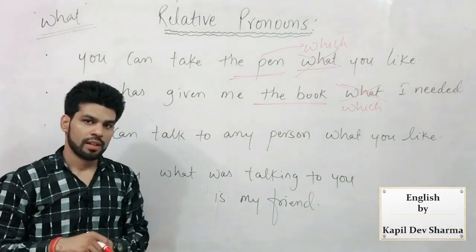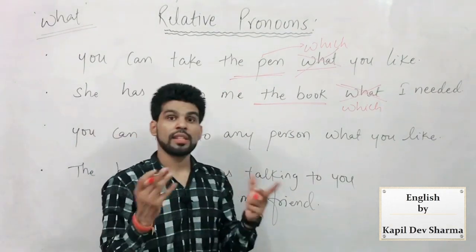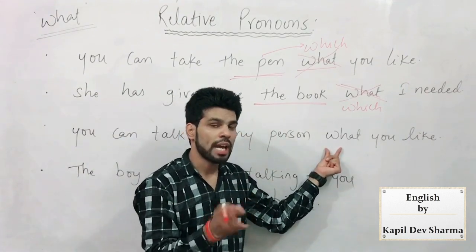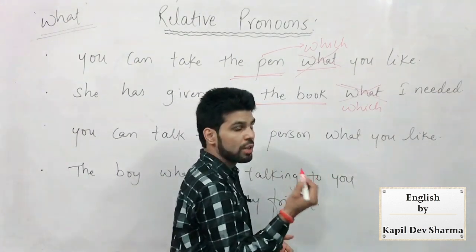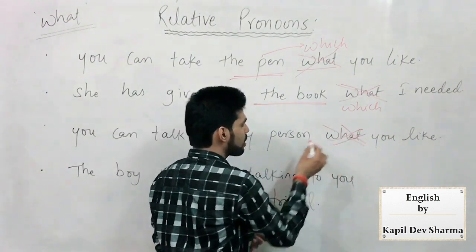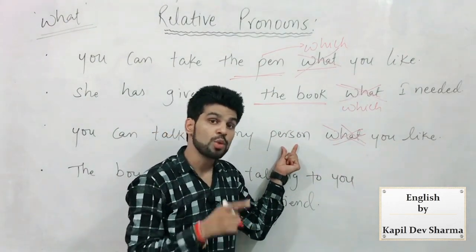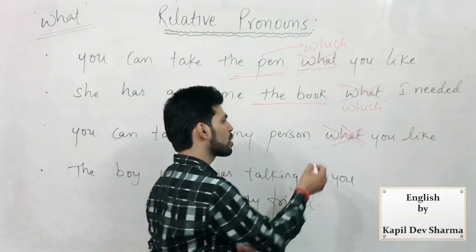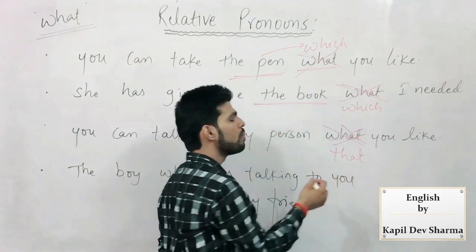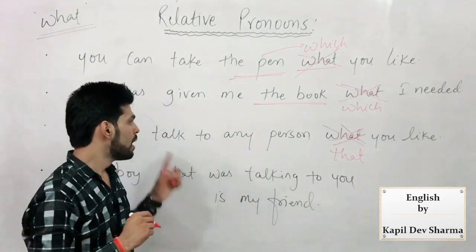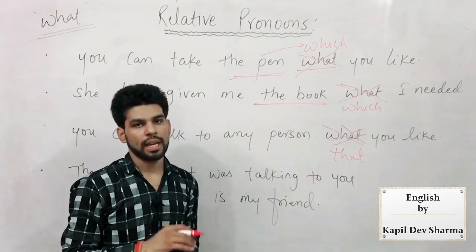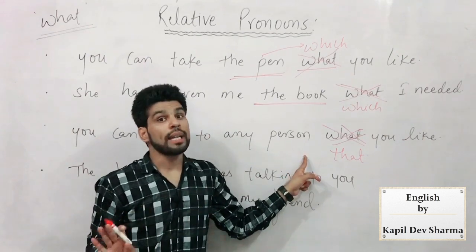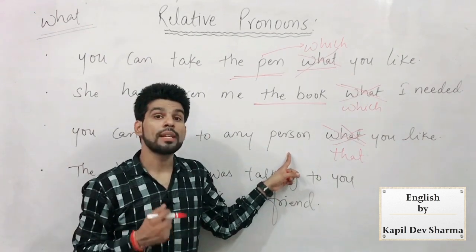'You can talk to any person — what you like' — aap kisi bhi insaan se baat kar sakte hain, jis se aap chahein. Yahaan par 'what' nahi aayega — because yahaan 'person' antecedent maujood hai. Aur jab pata hai toh phir 'what' kyun use karun? Isilie yahaan se 'what' hata dijiye. 'You can talk to any person that you like' — aur 'whom you like' bhi likhha ja sakta hai — ek hi baat hai. What ke paas antecedent nahi hota, aur yahaan antecedent maujood hai.